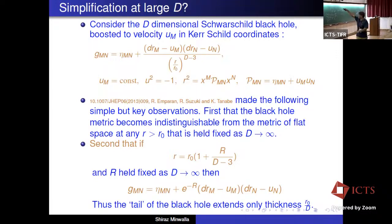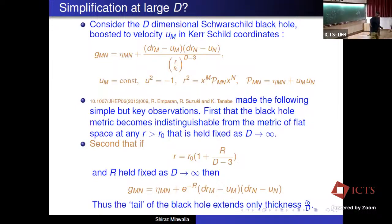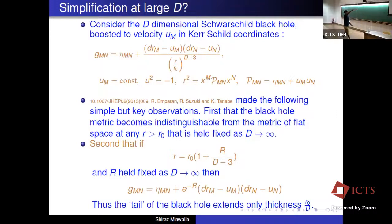Something interesting happening as you go from gravity to fluid dynamics presumably requires a parameter — it's too much to ask for it to happen in general. So now we're going to try to invent our parameter and start working with black holes at large values of d. Consider the d-dimensional Schwarzschild black hole boosted to velocity u^μ — some d-velocity that squares to minus one, with both time and space components.